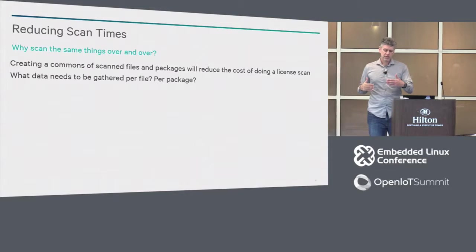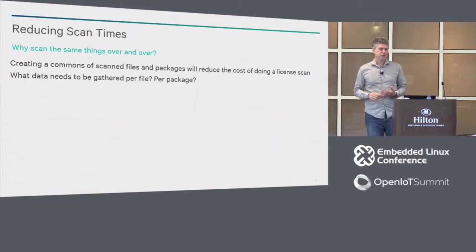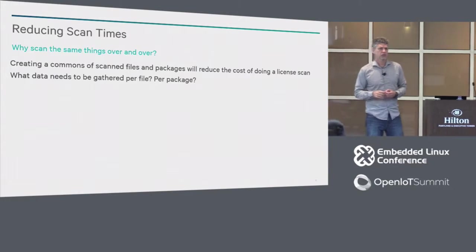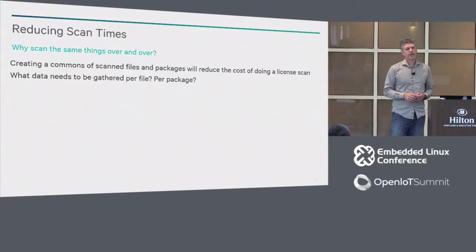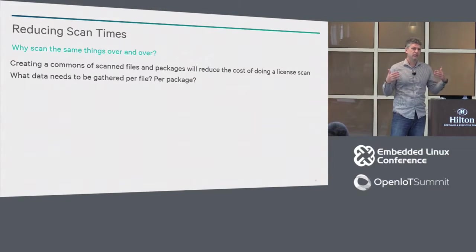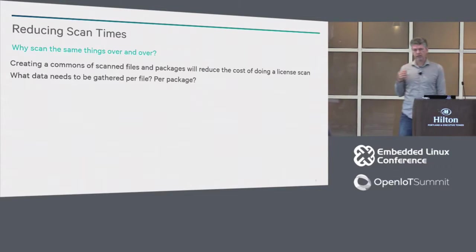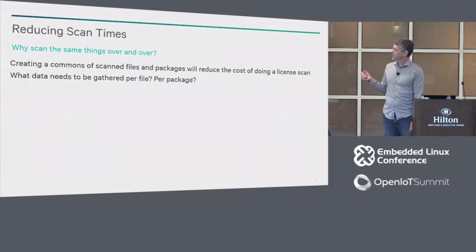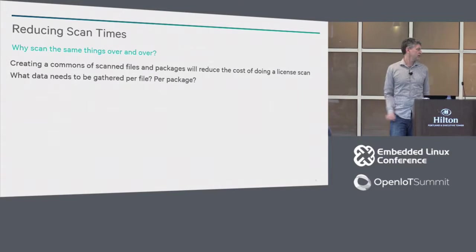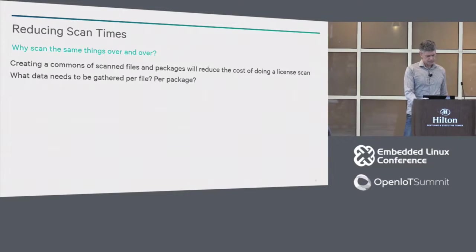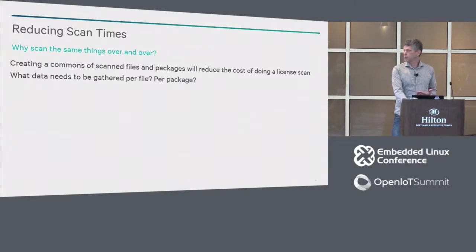So why make that separation? One reason is to reduce scan time. Many, many people doing this don't have to all scan the same files over and over — it's very expensive. License scanning can actually take days if you have a very accurate scanner. When you want to get a product out and make a release, you don't want a six-day wait. So it would make sense to create a commons of scanned files. All the upstream packages in Yocto don't need to get scanned by everybody — they can all be leveraged from a commons of pre-scanned information.